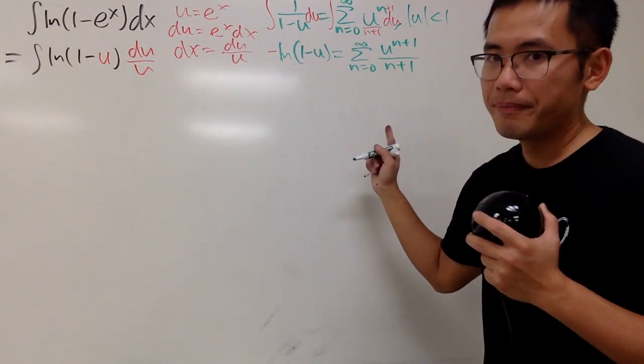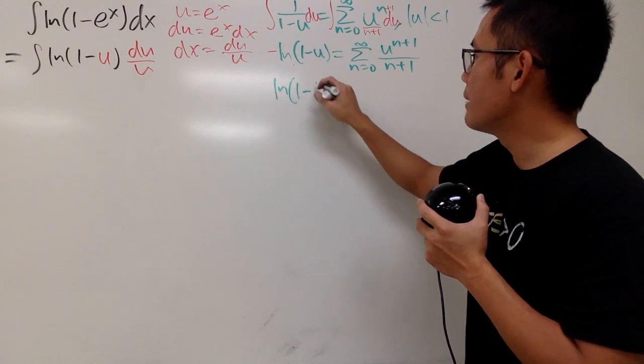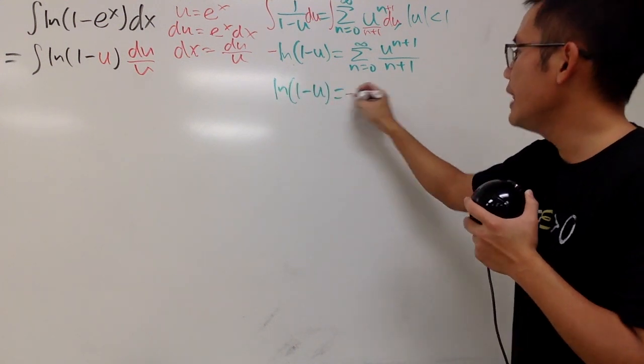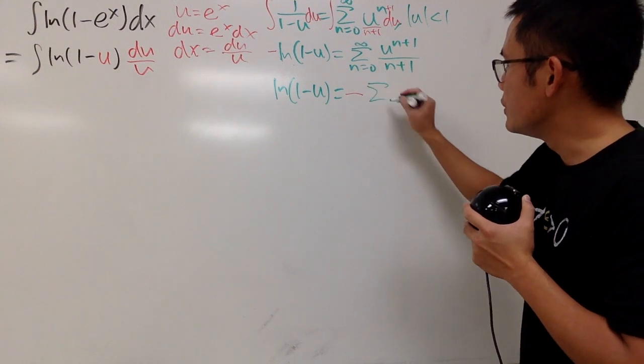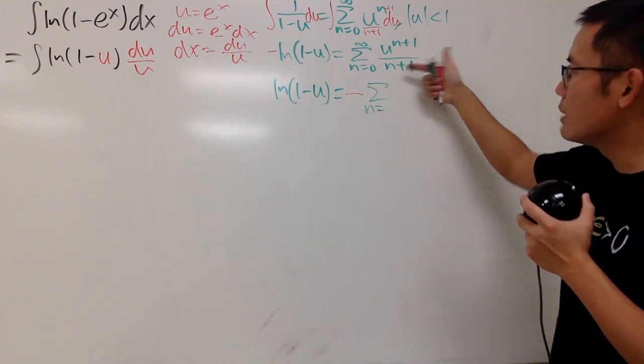Now, I'll fix this a little bit. Let me divide the negative 1 on both sides. So, we get ln of 1 minus u. That's equal to negative. This right here is the series as n goes from... I see that we have n plus 1, n plus 1.